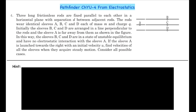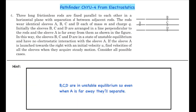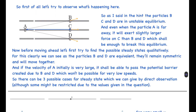If you want to give it a try, you should do it now. The hint: B, C, D are in unstable equilibrium, so even when A is very far away they will separate very easily. Focus on the idea that when A is very far away, B, C, and D will just separate on their own.